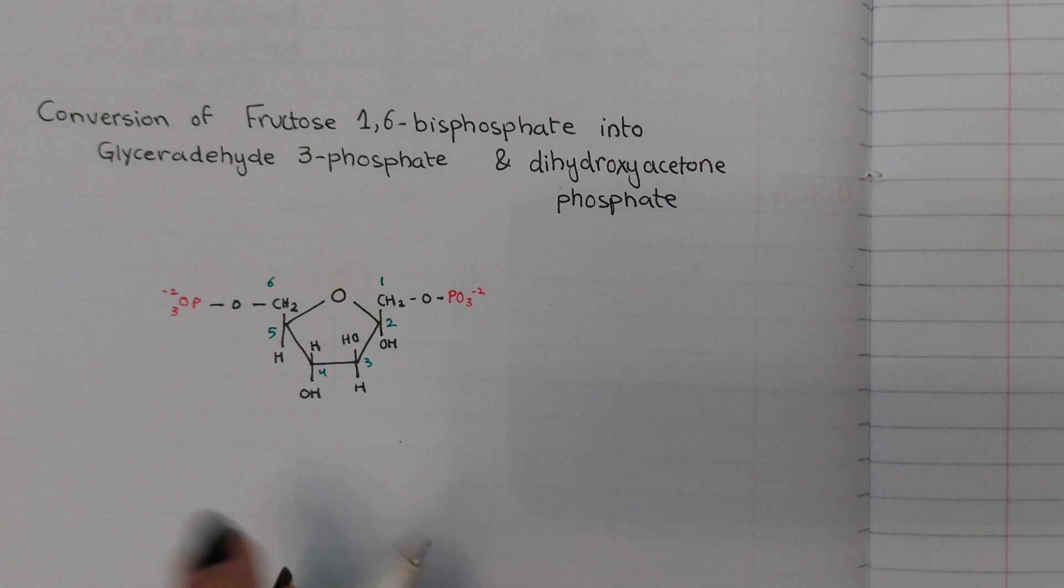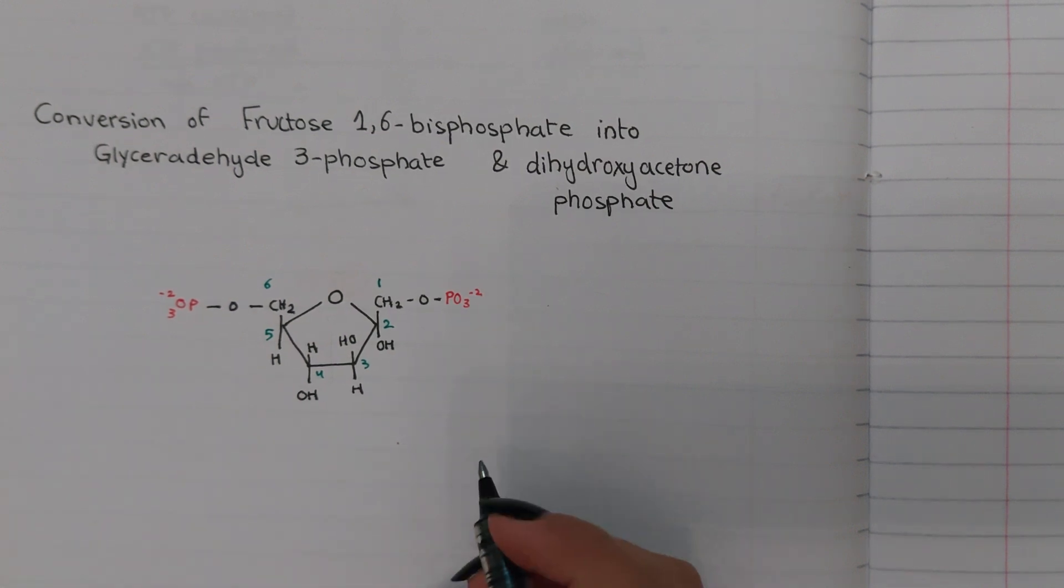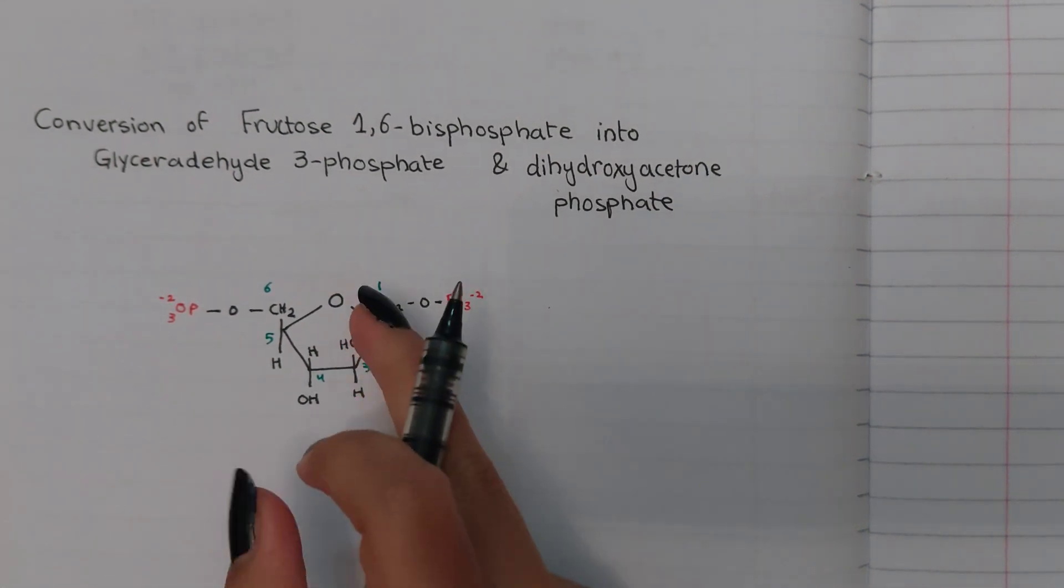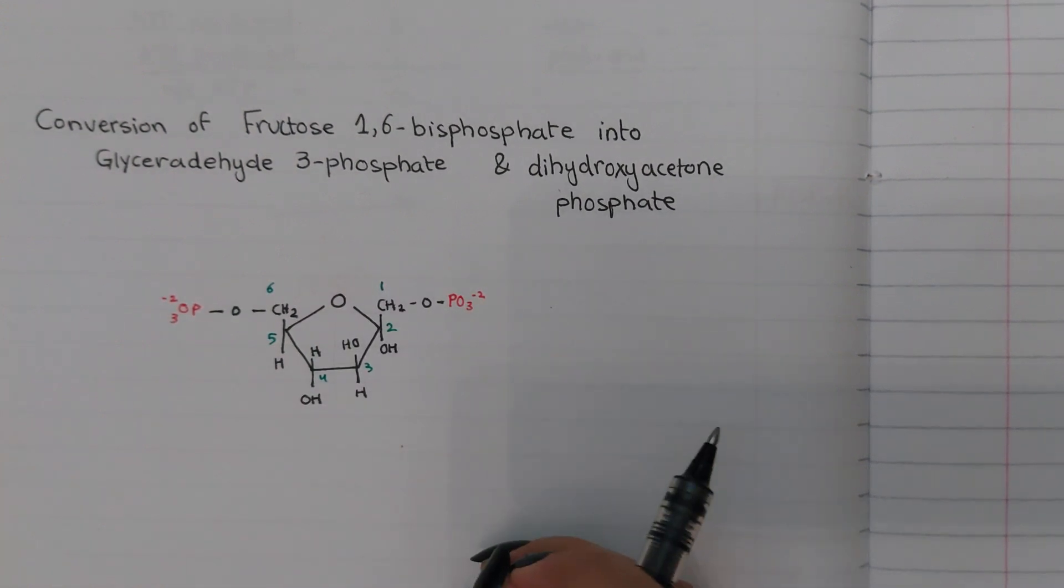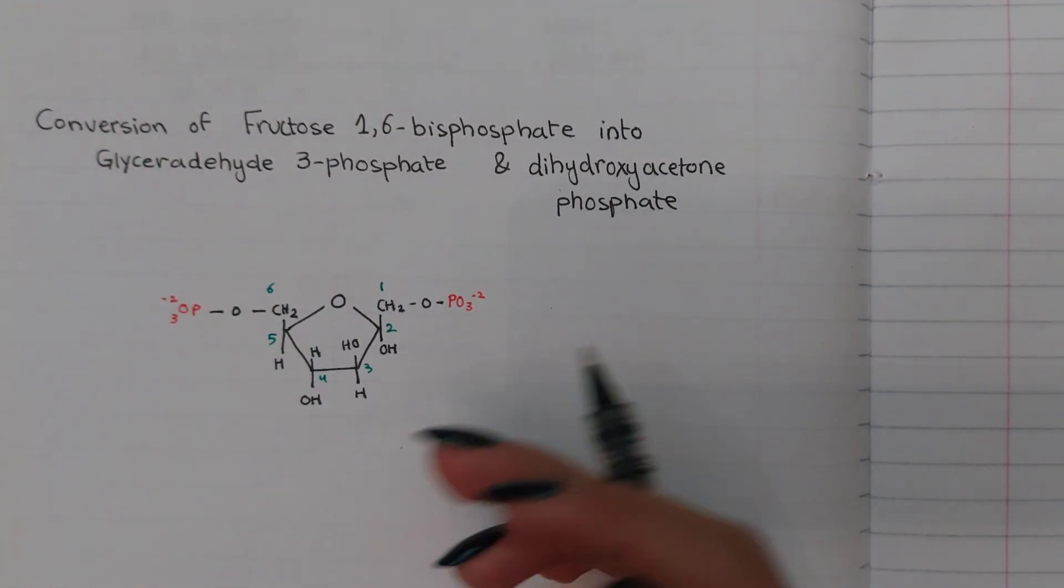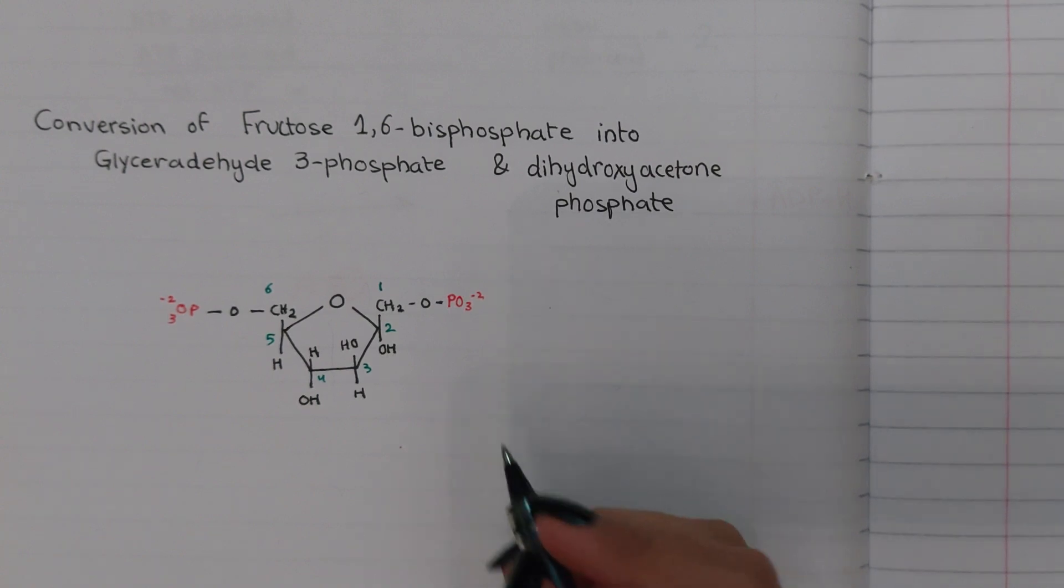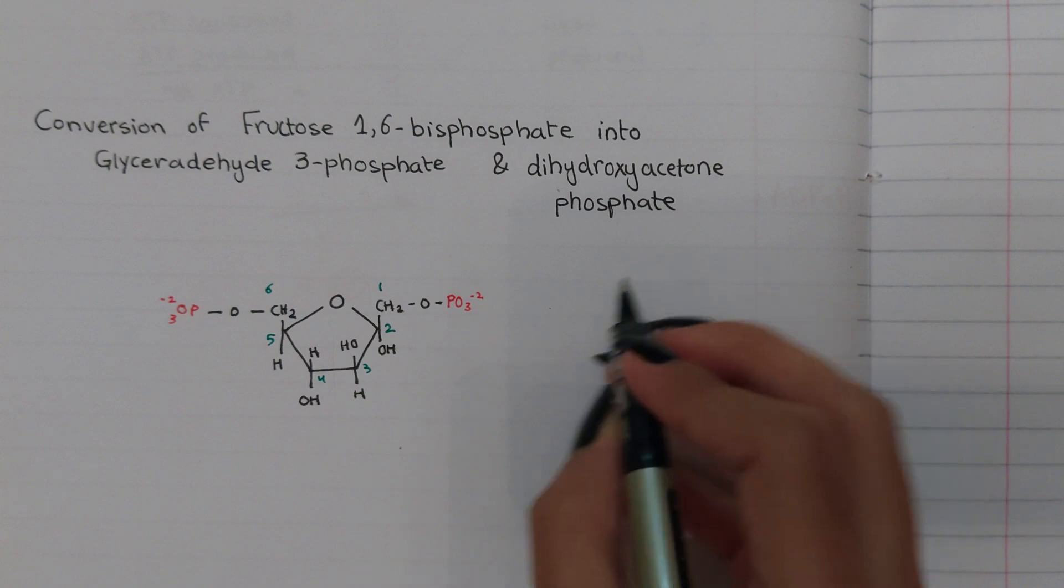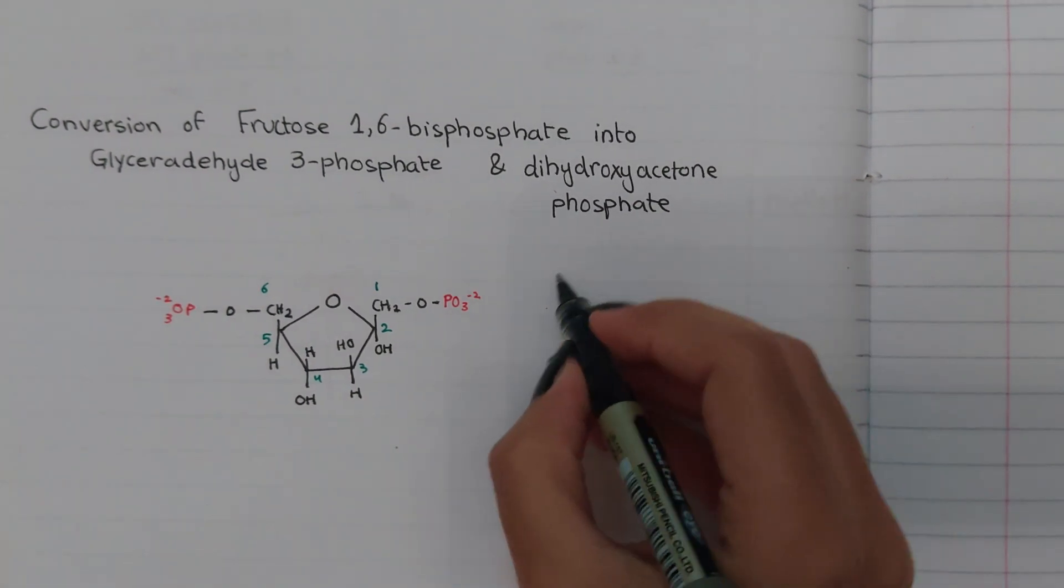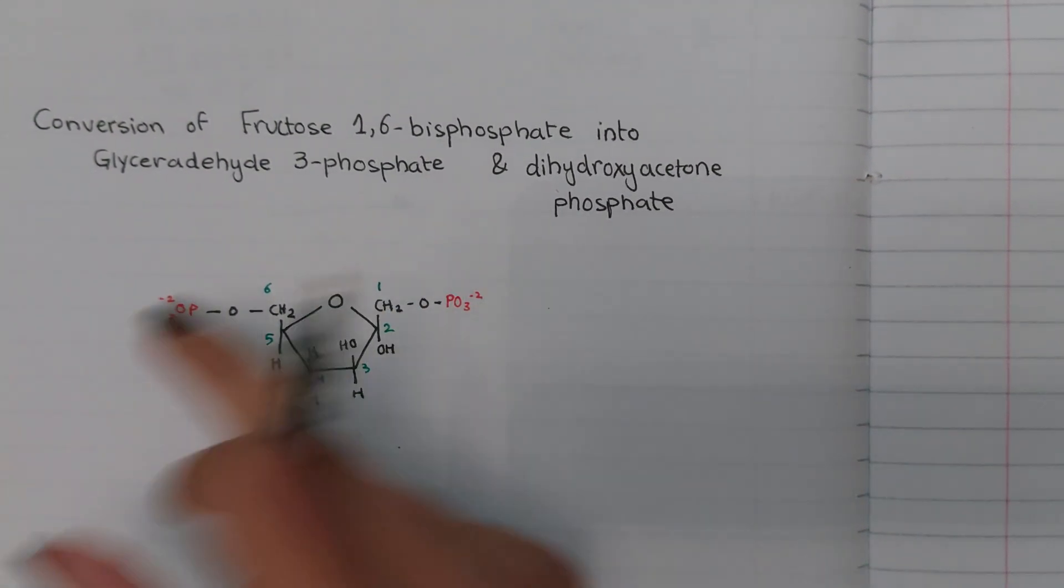In this conversion, people often get confused where the structure gets broken down and becomes two molecules. This reaction occurs in the presence of the aldolase enzyme, and to make things clearer, I would prefer to break down this structure and open the ring.